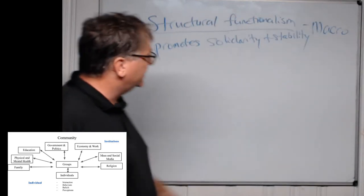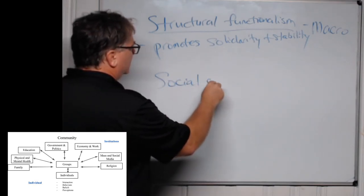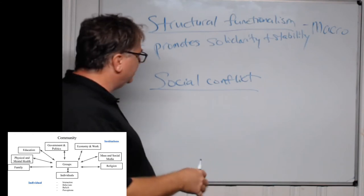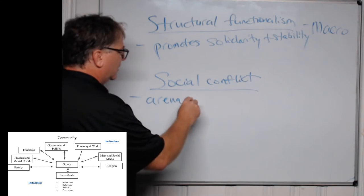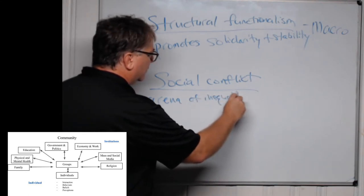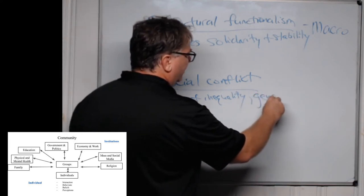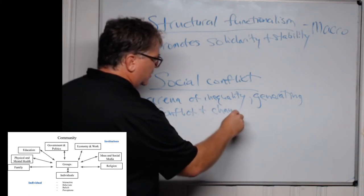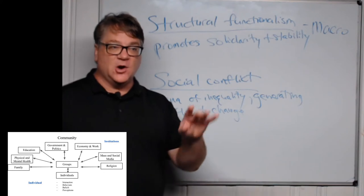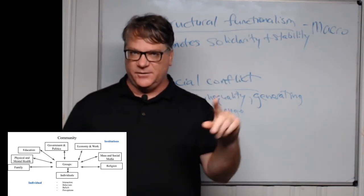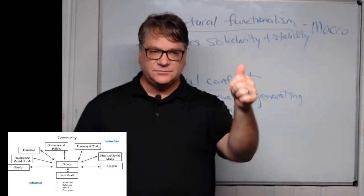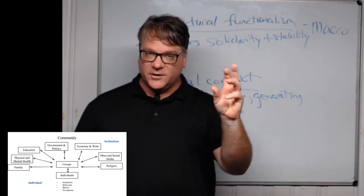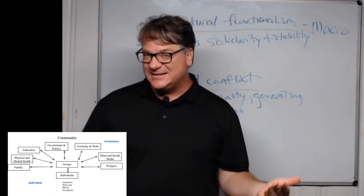The next theory is social conflict theory — the social conflict approach. This is an interesting one. It sees society as an arena of inequality generating conflict and change. There are some central concepts that are part of social conflict theory: race and ethnicity, gender, social class, and sexuality. Those are all fundamental parts of social conflict theory.